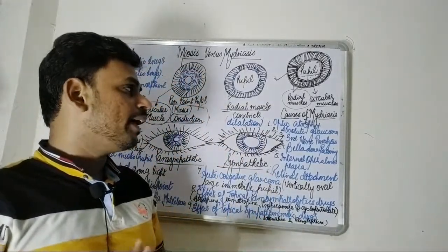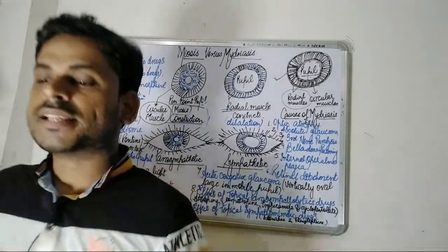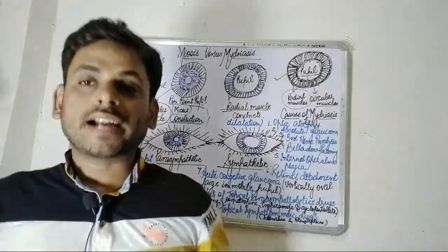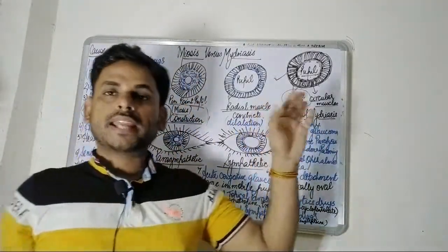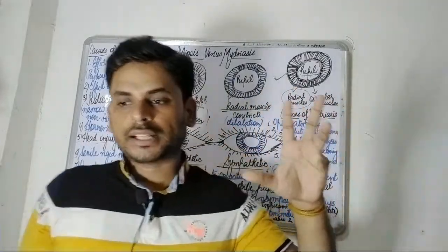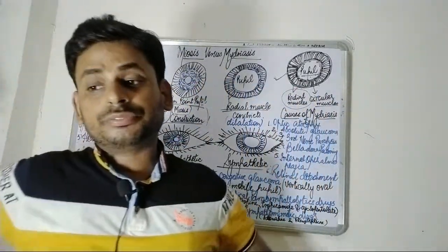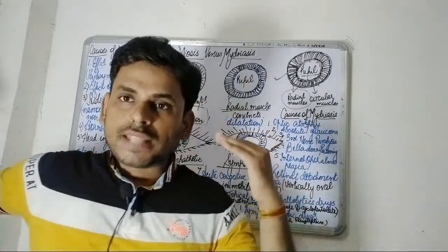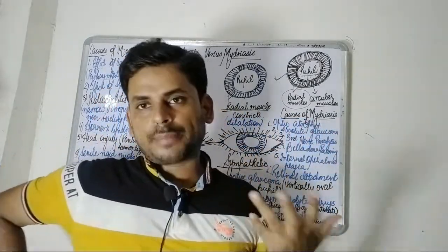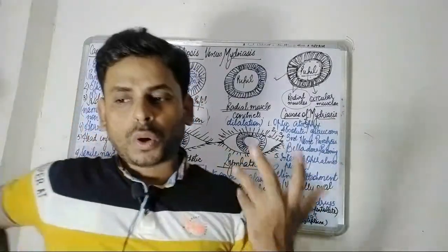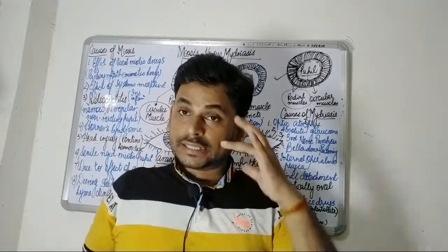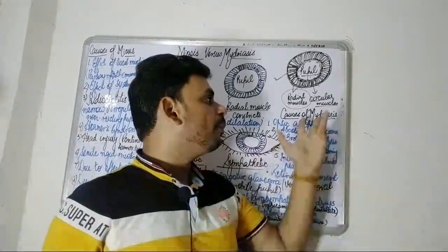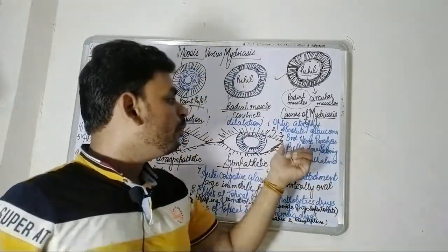Moving on to the causes of mydriasis: the first important condition is optic atrophy, which refers to the death of retinal ganglion cells — the axons that comprise the optic nerve. Optic atrophy is seen in conditions of absolute glaucoma, where there is total blindness and uncontrolled intraocular pressure, which also leads to absolute glaucoma as another cause of mydriasis.